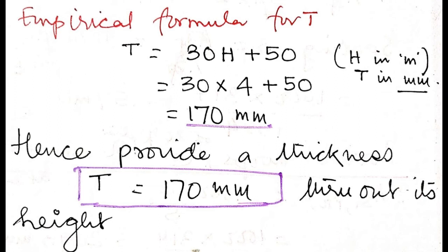Step 3: Find wall thickness using the empirical formula from the code: T = 30H + 50, where H is in meters and T is in millimeters. With H = 4 m: T = 30 × 4 + 50 = 170 mm. Provide a wall thickness of 170 mm throughout its height.